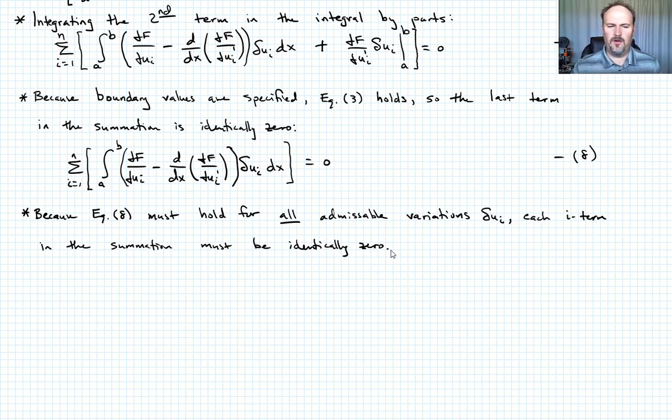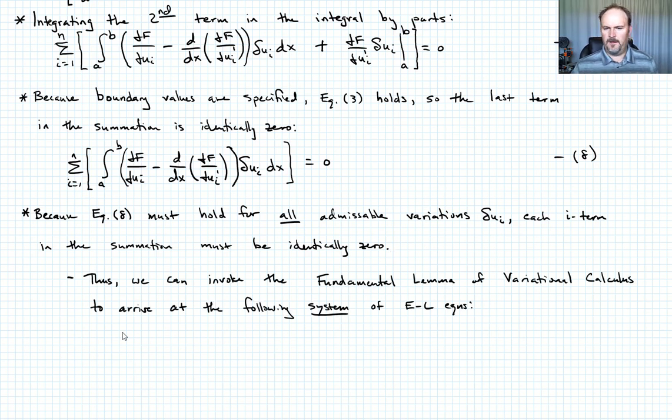So what we can do is we can then invoke the fundamental lemma of variational calculus to arrive at a system of Euler-Lagrange equations. And so it's pretty simple to see what that looks like. That just means that our system is now partial f with respect to ui minus d by dx of partial f with respect to ui prime, right? That quantity must be equal to zero for all i is equal to one, two, up to n, right? We'll call that equation nine.